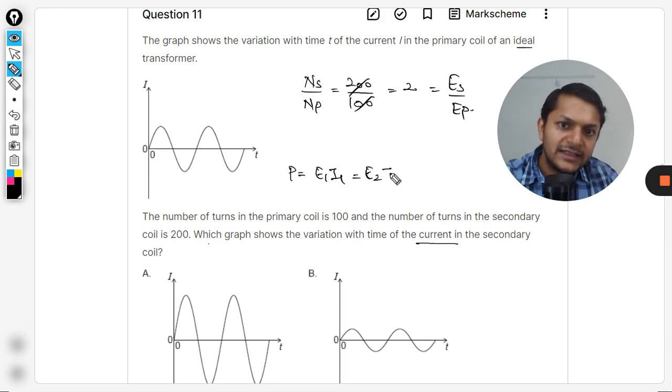V1*I1 and that same power is delivered at the output because it is an ideal transformer, efficiency is 100%. So V1*I1 equals V2*I2. From here I can only say that current will become half, because the voltage is doubled.